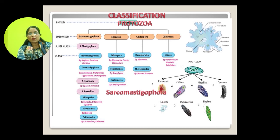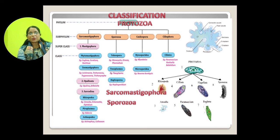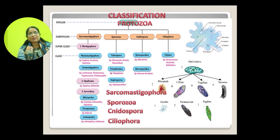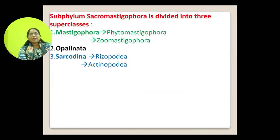The phylum is divided into different subphyla, then superclasses, and then classes. The four subphyla are Sarcomastigophora, Sporozoa, Nidospora, and Ciliophora, each subdivided into different superclasses and then different classes.